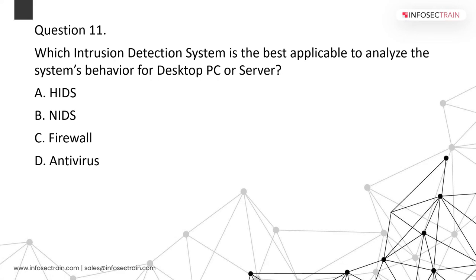Which intrusion detection system is the best application to analyze system behavior for a desktop PC or server? The answer is HIDS. HIDS analyzes each system's behavior — applications, desktops, or servers. An IDS (NIDS) is for network-level detection.